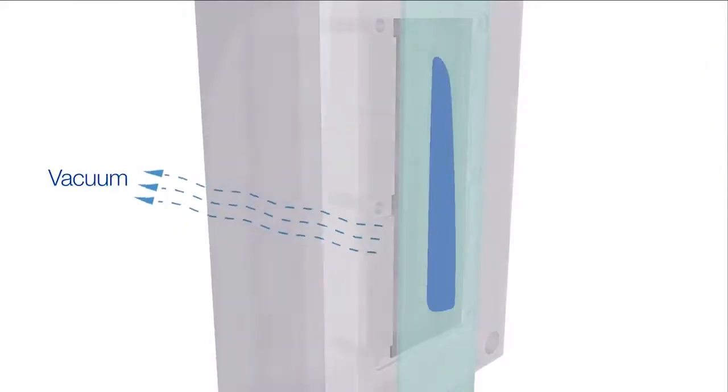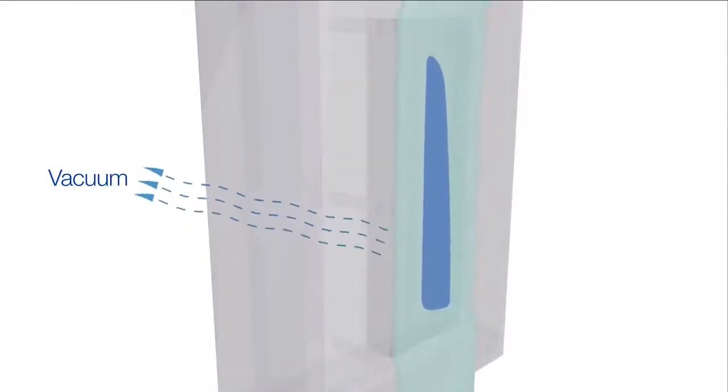Once the film is aligned, it's clamped into place and a vacuum engages, drawing the film into the profile of the mold cavity.